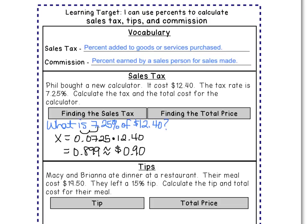So we know Phil pays 90 cents in sales tax. How much is he actually going to pay for that calculator? There's one last step: take the price of the calculator, $12.40, and add the tax amount, 90 cents, to get a final price of $13.30.